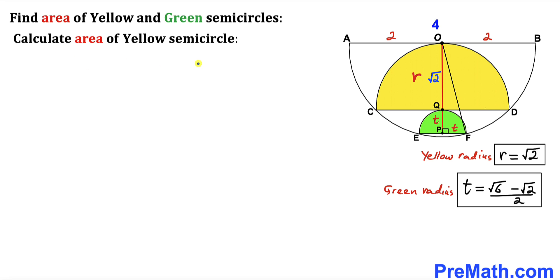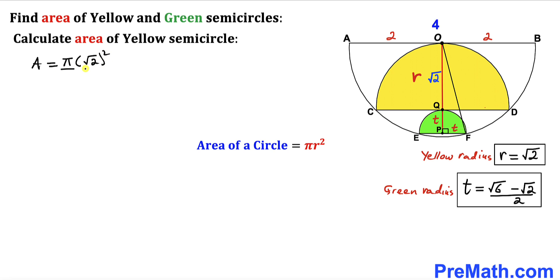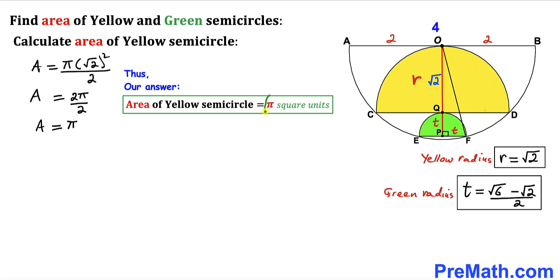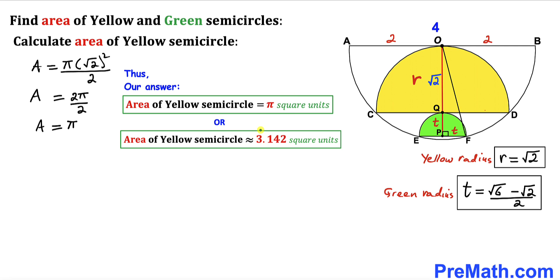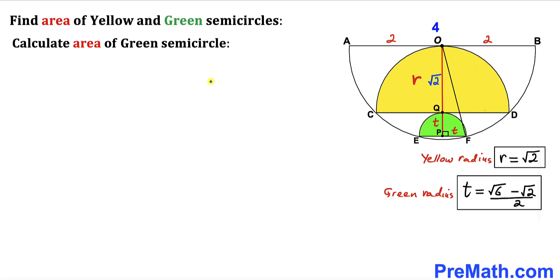Now let's calculate the area of this yellow semicircle. Recalling the area of a circle formula, Area = πr². The radius for this yellow semicircle is √2. So the area of this yellow semicircle is: A = π·(√2)² / 2 = 2π / 2 = π. Therefore the area of this yellow shaded semicircle turns out to be π square units, which is approximately equal to 3.142 square units.